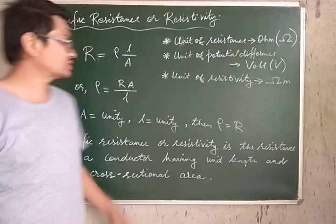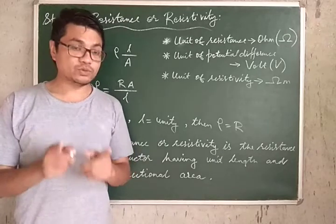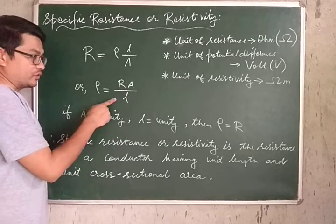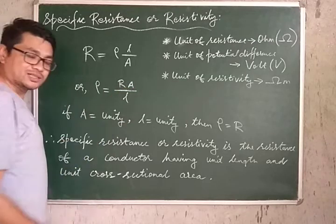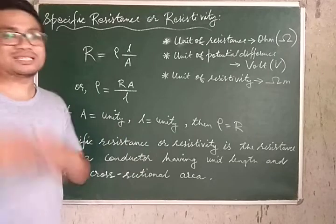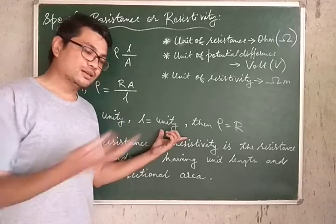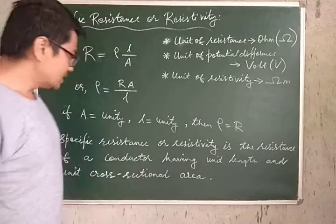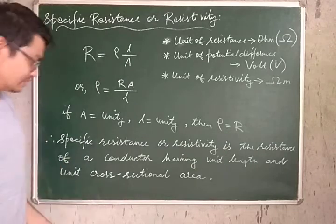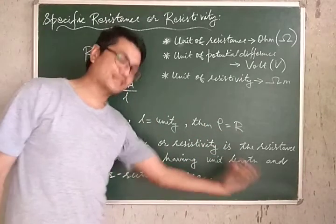The resistance of a conductor is given by R = ρL/A, where rho depends on the material of the conductor and is called the specific resistance or resistivity. If we take the area to be unity — 1 meter squared in SI or 1 centimeter squared in CGS — and the length to be unity as well, then rho becomes equal to R.